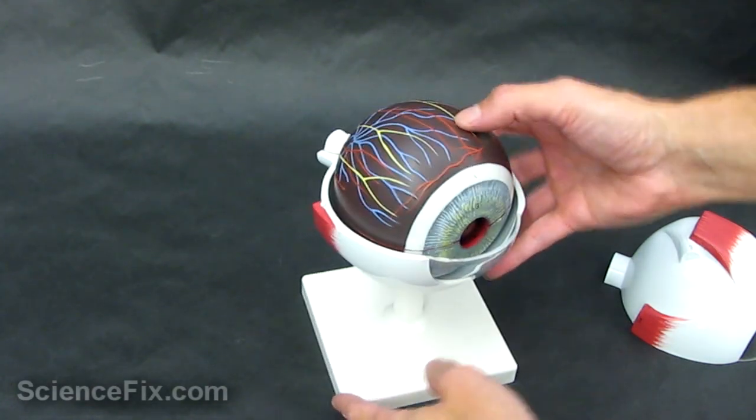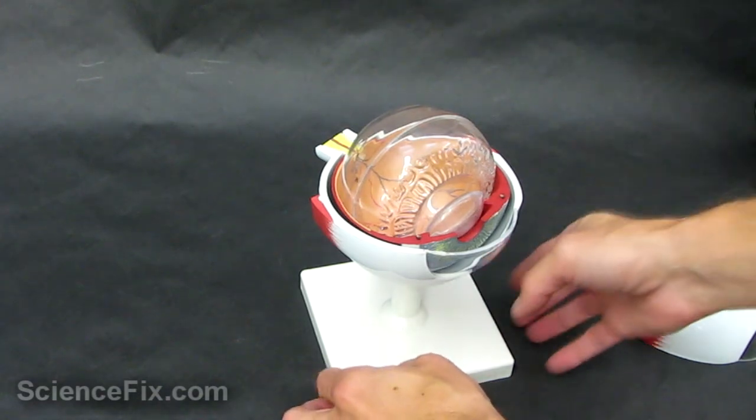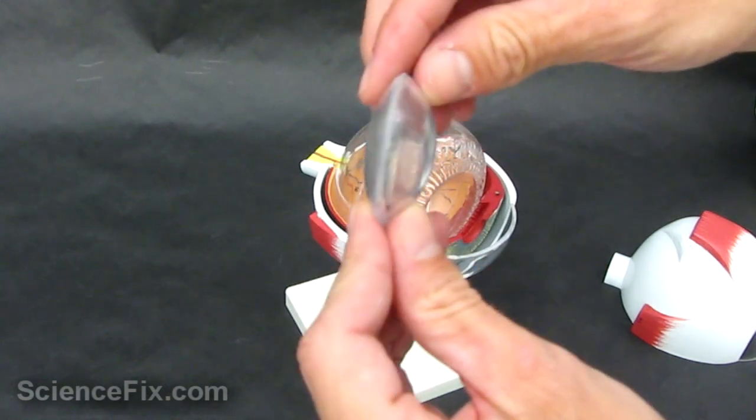We're going to take off this next layer, which is going to reveal the lens behind the iris and the pupil. Behind the lens is a series of liquid which the light travels through. This lens is a convex lens. It's big in the middle and tapered toward the edges.